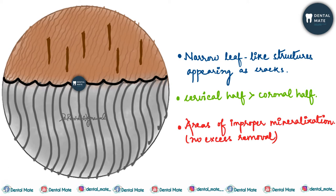If we talk about the reason as to why enamel lamellae are seen, the enamel lamellae represent areas of improper mineralization of the enamel matrix, which is due to the failure of removal of the organic matrix and water during mineralization. What happens during enamel matrix formation is that first the enamel matrix is laid down and then mineralization occurs. The enamel lamellae depict areas where there is a failure of removal of the organic contents and water from the enamel matrix, due to which mineralization is not taking place, resulting in the formation of enamel cracks.